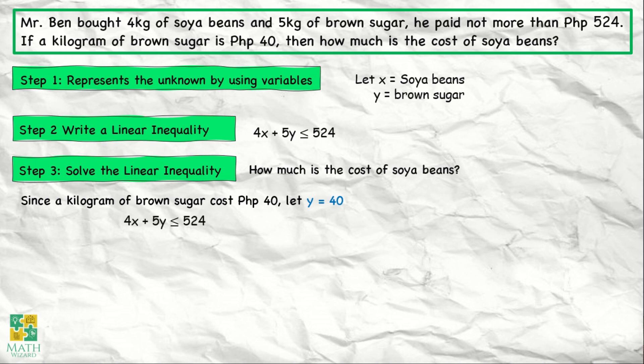If 4x plus 5y is less than or equal to 524, we substitute the value of y in our linear inequality. This becomes 4x plus 5 times 40 is less than or equal to 524. Simplifying, 4x plus 200 is less than or equal to 524. Next, we need to subtract 200 from both sides of the equation.